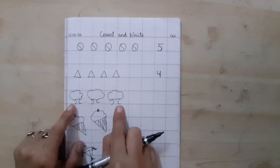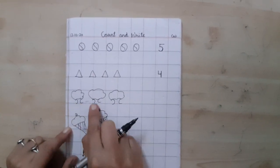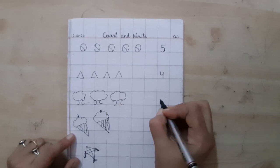These are trees. Count the trees. 1, 2, 3. 3 trees.